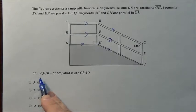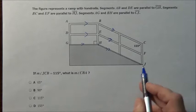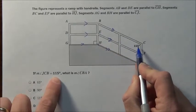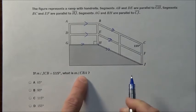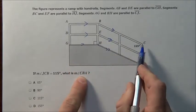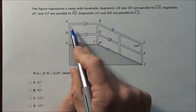It says if the measurement of angle JCB - let's find J to C to B - is 115°, they already labeled it for us. What is the measurement of angle CBA? So we want that measurement right there.